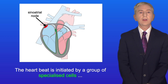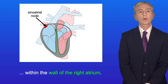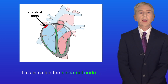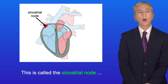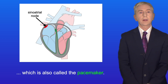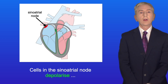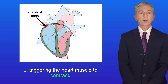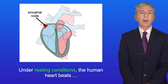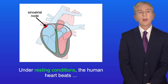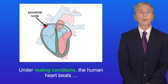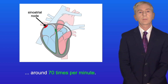The heartbeat is initiated by a group of specialized cells within the wall of the right atrium. This is called the sinoatrial node, which is also called the pacemaker. Cells in the sinoatrial node depolarize, triggering the heart muscle to contract. Under resting conditions, the human heart beats around 70 times per minute.